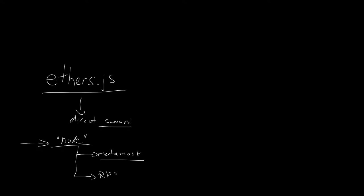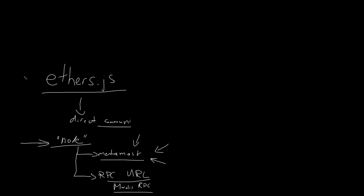You can also specify the RPC URL yourself — the URL of the node. However, the problem with specifying an RPC URL directly in the front end is that everyone can see it. If you have an API key from somewhere, like Moralis RPC nodes, putting them in your front end means others will use your rate limit. Most often you want to use the node provided by the wallet.